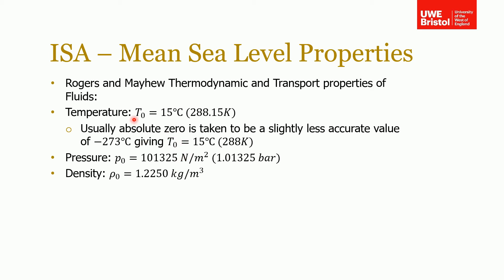Looking in the properties book — Rogers and Mayhew's Thermodynamic and Transport Properties of Fluids — the ISA defines the following values at sea level: temperature is 15 degrees Celsius, which we convert to Kelvin for calculations (to the nearest integer is fine for most calculations); pressure at ground level is 101,325 Pascals; and the density of air is 1.225 kilograms per cubic meter. These are the standard values to use for calculations at sea level. How to calculate them as you go up in altitude will be shown in the next sections.